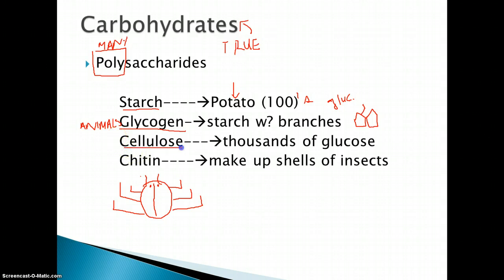Then we have cellulose. This is what makes up grass and plants, and it is indigestible. It has thousands of glucose molecules bonded together, making it indigestible by human beings. This is a very complicated carbohydrate, and it makes up plants.